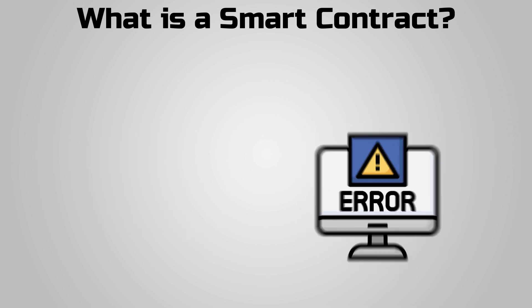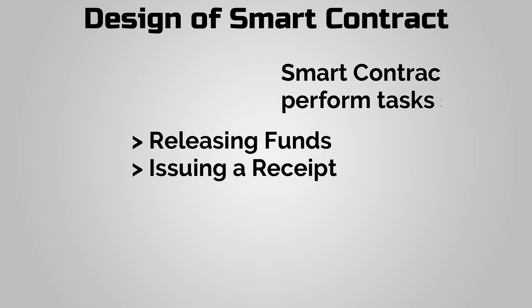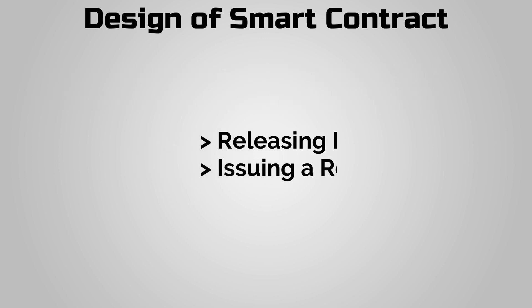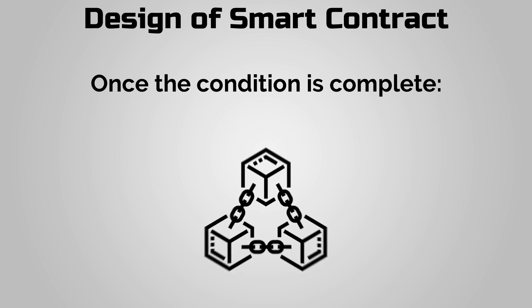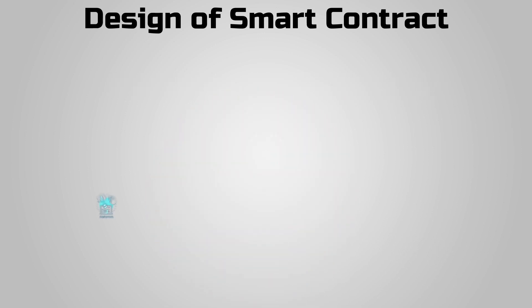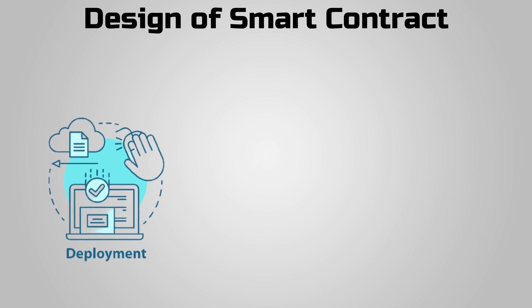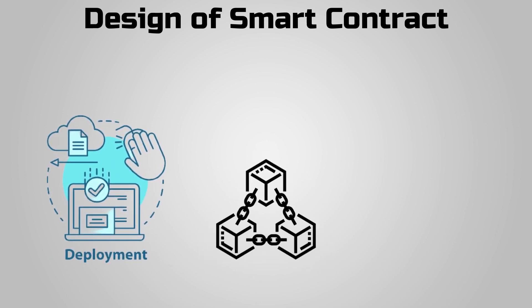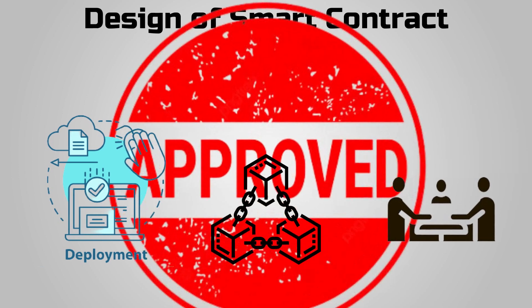A smart contract could be designed to perform tasks such as releasing funds to certain parties or issuing a receipt. Once the condition is complete, the blockchain is updated, making the transactions unchangeable. The terms, as well as the parameters for deployment of the contract onto a blockchain, are established and agreed to by the parties.